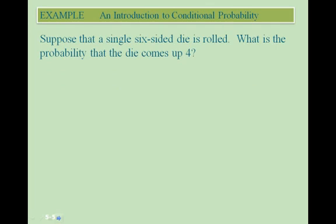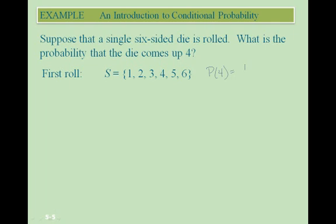Let's look at an example. Suppose that a single six-sided die is rolled. What is the probability that the die comes up 4? On our first roll, the sample space is the sides 1 through 6, so there are six total possibilities. The probability of getting a 4 would equal 1 out of 6.